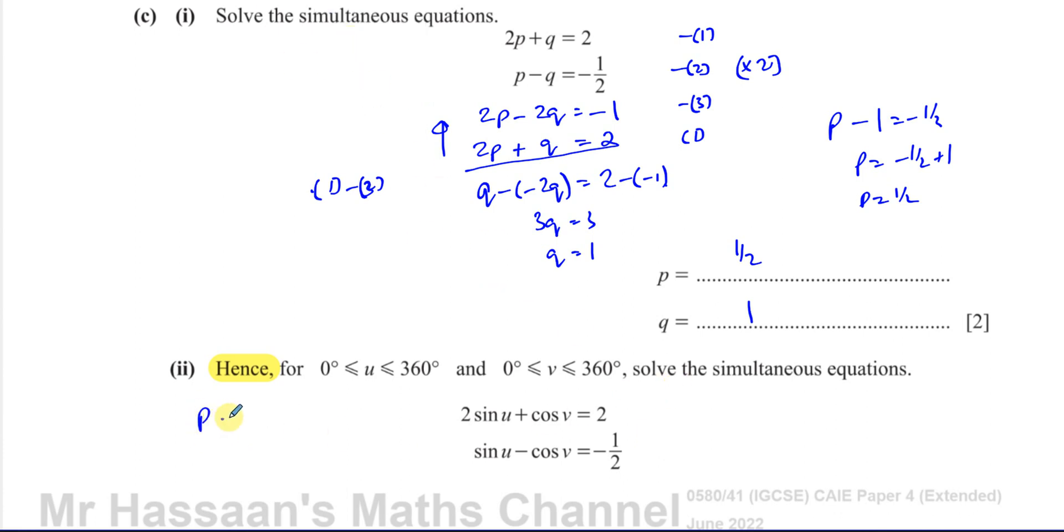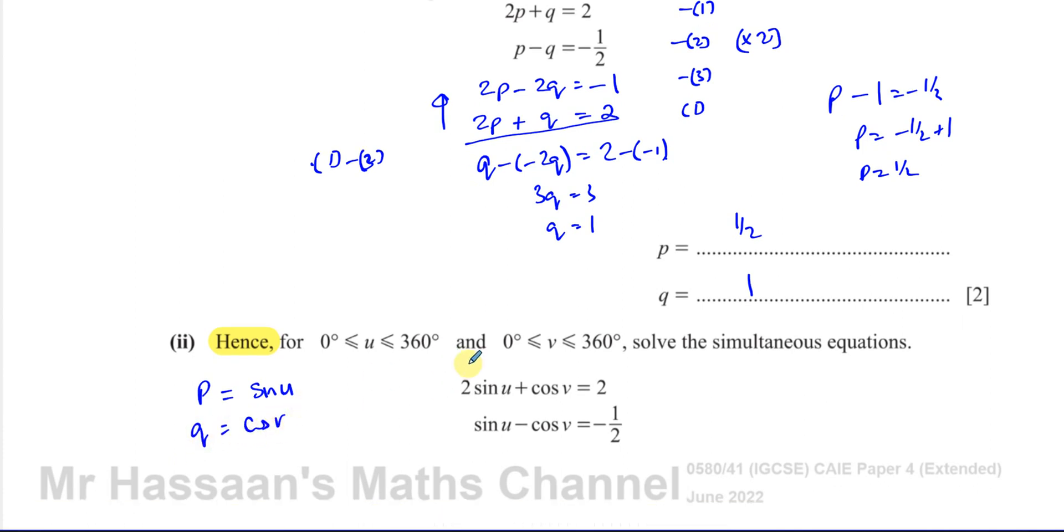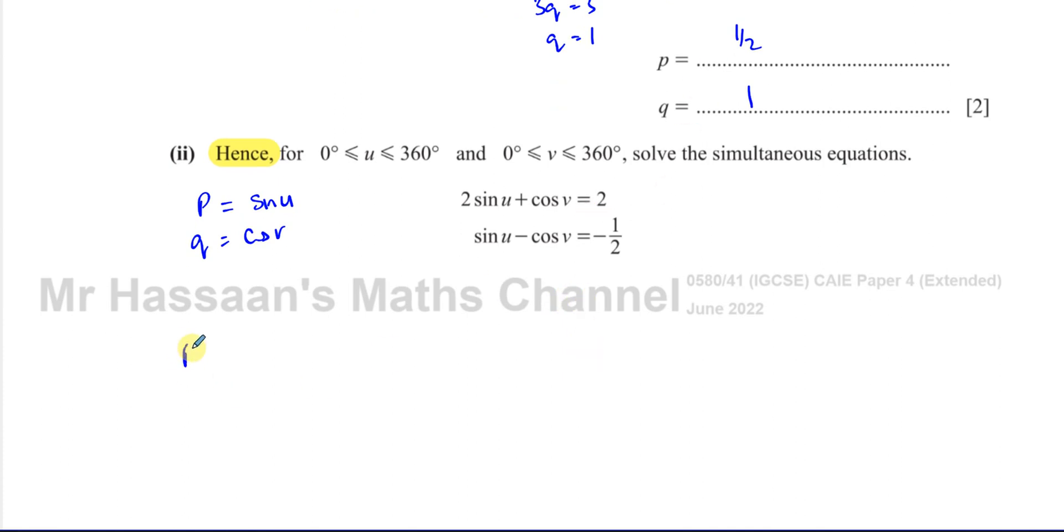So if we get our answers from before, p equals a half and q equals 1, we can say if p equals a half, sine u equals a half. That's the solution to this. And if q equals cosine v, and q equals 1, then cosine v equals 1.